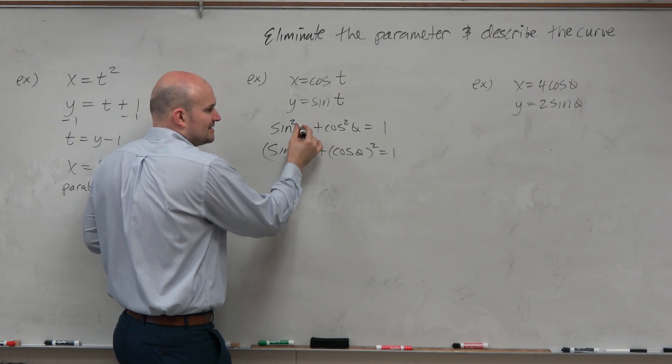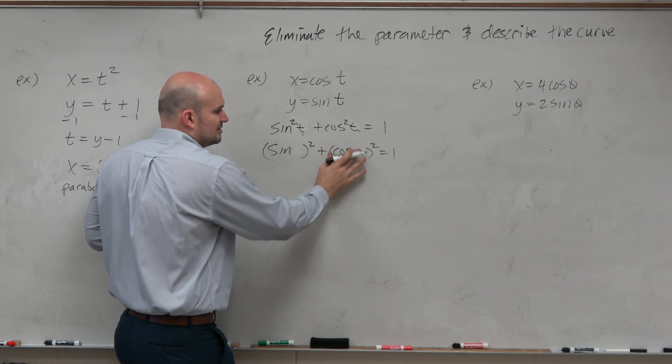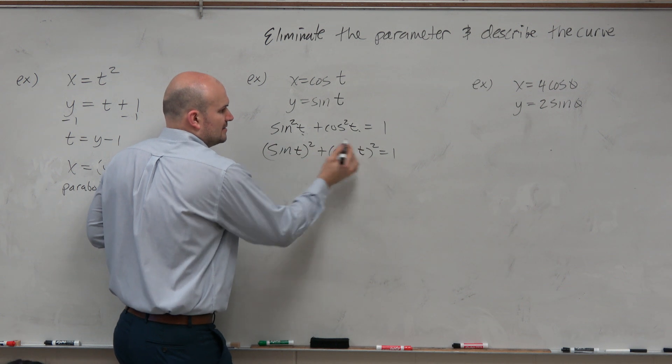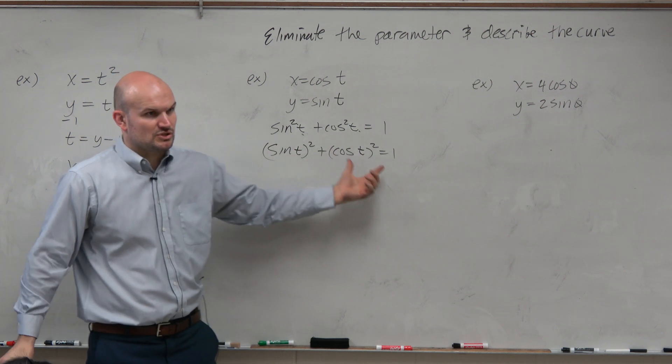Again, I could just rewrite this. It doesn't matter what the variables are. It could be theta, it could be beta, it could be alpha, it doesn't matter. But you guys agree that sine squared plus cosine squared equals 1.